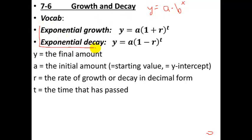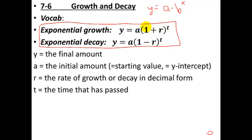Exponential growth and exponential decay use the same equation, except for growth it's one plus r, which means the number inside will be bigger than one. For decay it's one minus r, giving you a number less than one — so when you multiply by it, your overall answer gets smaller and smaller. In both cases, y is the final amount, a is the initial or starting value, and one plus or minus r is the ratio — that's one plus or minus the rate of growth.